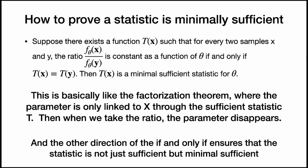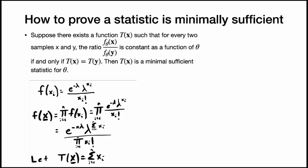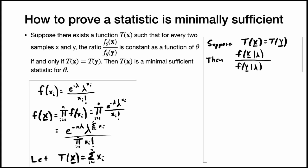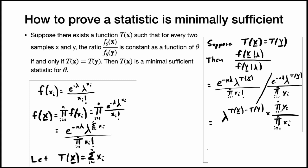Let's look at how to prove something is minimal sufficient using this theorem with a Poisson distribution. Here is the PMF for a Poisson distribution, and here is our joint PDF of the data — we take the product of the individual PDFs to get the joint PDF. We know our sufficient statistic is the sum. For the first direction of the if-and-only-if: suppose t(x) equals t(y) for two data sets x and y, and let's look at the ratio of the two joint PDFs. We take the joint distribution for x and the joint distribution for y and divide them, then do some simplification.